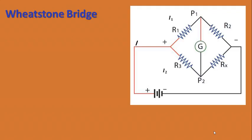Dear students, you can see in this diagram — here is a source. Current I1 flows into the circuit, and here are the combinations of resistors which are connected in parallel: R1 and R2, R3 and Rx. In this diagram, Rx is the unknown resistance which we have to find out.